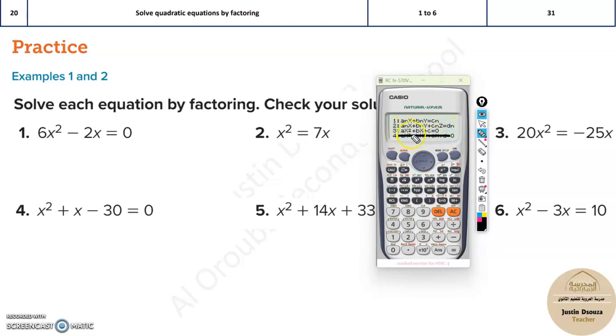A is the value before x squared. B is the value before x. And C is the constant. Remember, it must be inside the equal to sign.